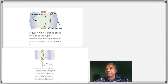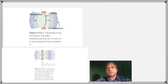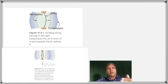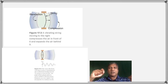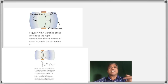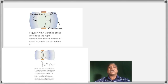Sound is a disturbance of matter that is transmitted from its source outwards. Anything that vibrates produces sound, meaning the vibration of the material is transmitted throughout the material. These vibrations are simple harmonic vibrations. For example, if you stretch a string and pluck it in the middle, it vibrates and produces sound — like a guitar string or violin string. In the physics lab, we use a tuning fork.